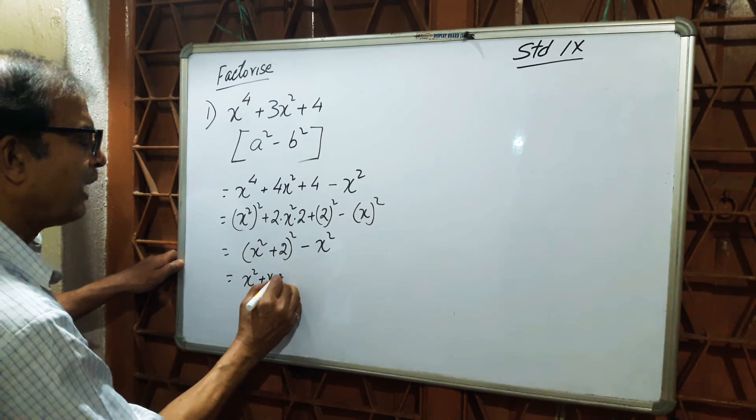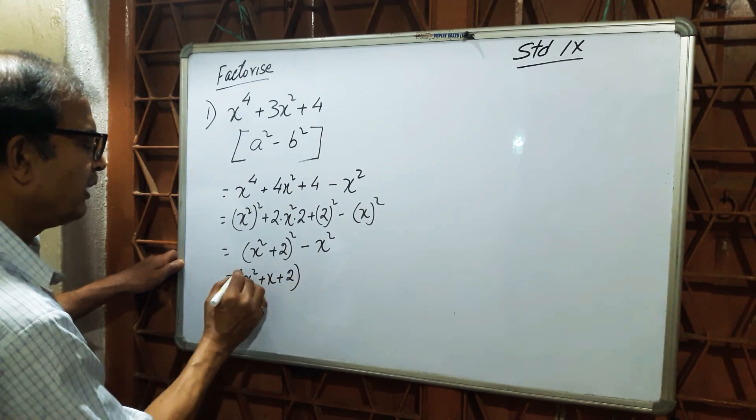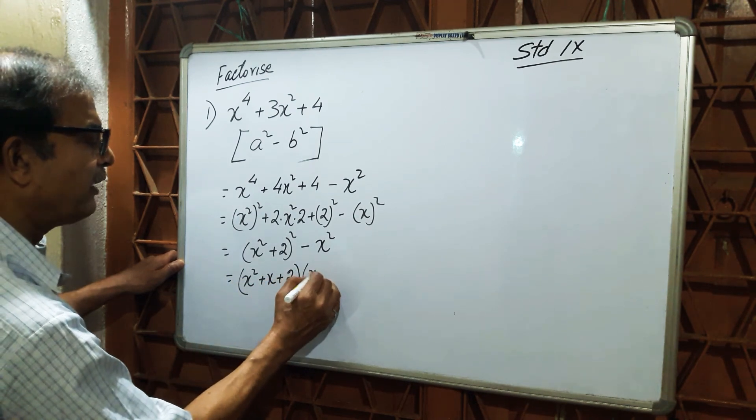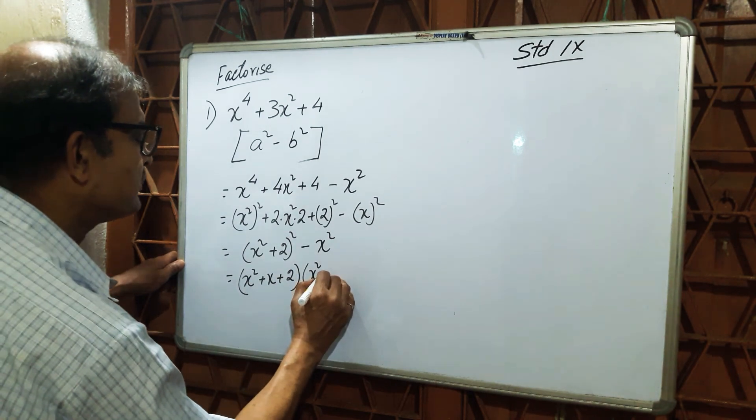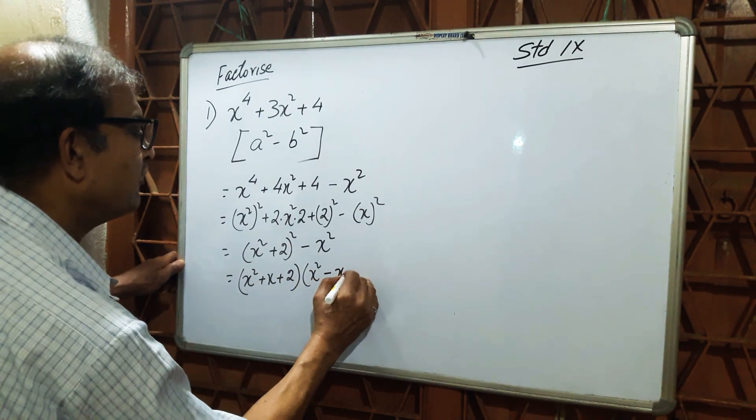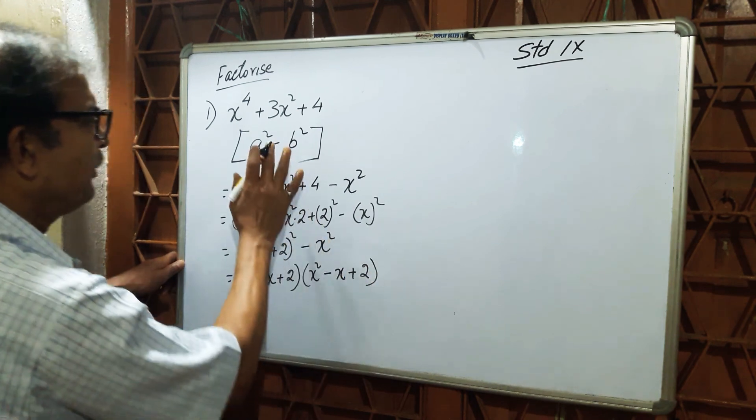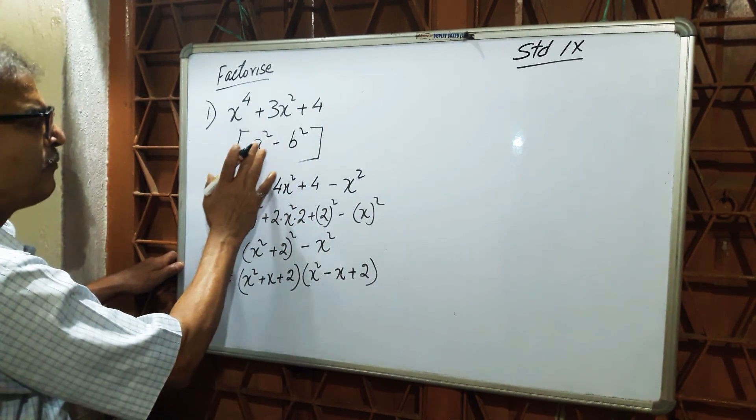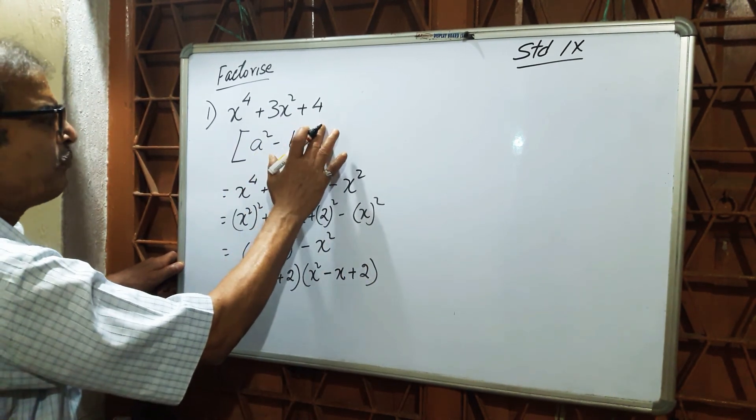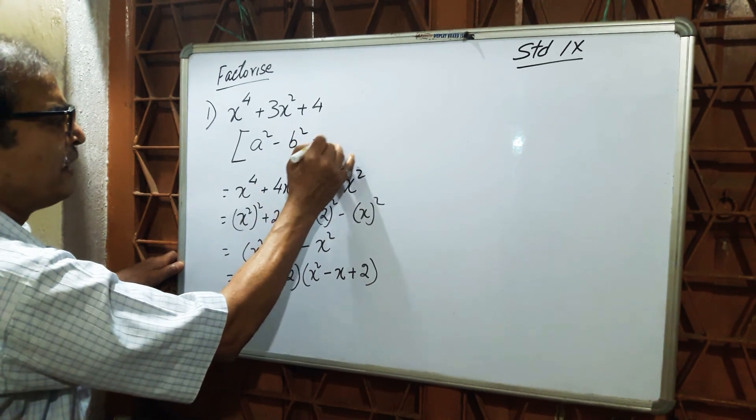x plus 2, and x squared minus x plus 2. It is very simple. You have to follow that a squared minus b squared equals a plus b into a minus b.